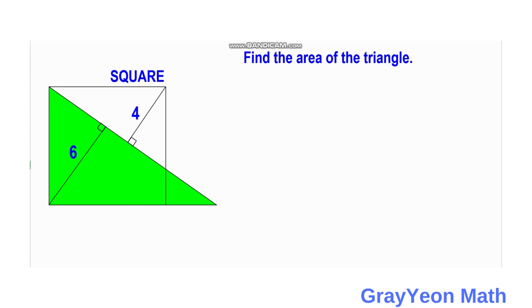Let us label this angle as alpha. Let us focus on the angles — this angle should be a complementary angle, and we call this beta. This angle in the green portion is actually the complement, which is beta. And since this is a small right triangle, this angle here should be the complementary angle alpha.